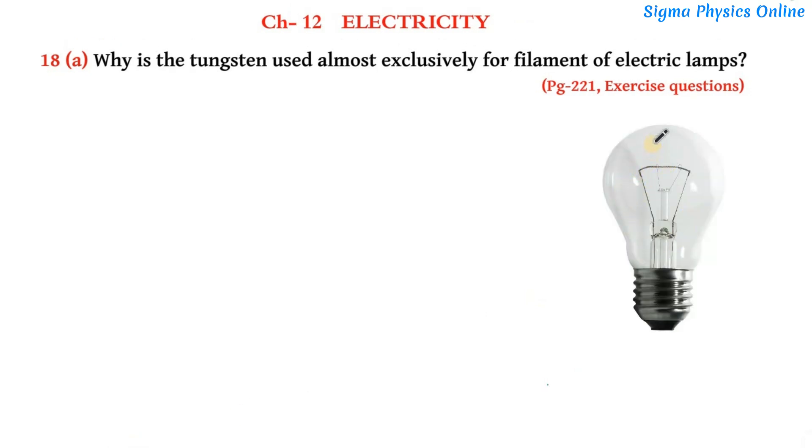So this is an electric bulb, and this is the filament of this bulb. It is that part of the bulb which glows and gives us light. Now this filament is made up of tungsten, but do you know why tungsten is used exclusively for the filament of electric bulbs? There are a few reasons.